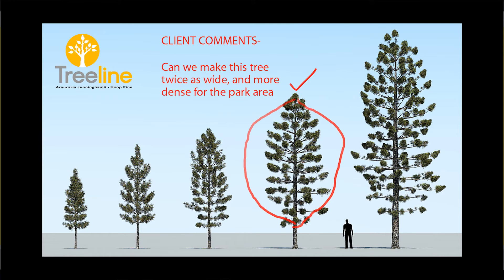OK, so here's a common scenario. The client says they are happy with the natural form of the trees in front of the building. The same tree is also specified in the adjoining park area and they would like it wider and more dense in this area for more shade. Thanks to the parametric nature of GrowFX models we are able to quickly and easily make these adjustments.